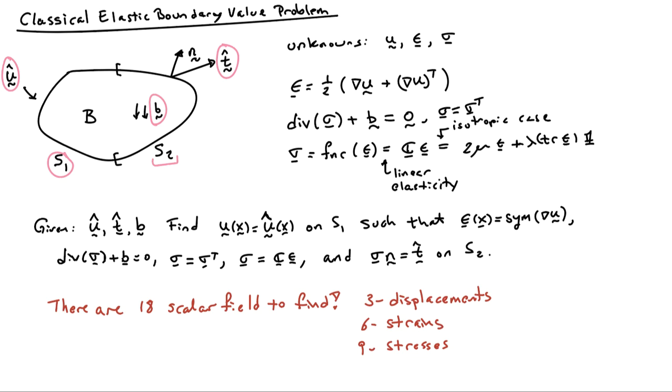Though really, one often says that they're just six, because we already know we have this statement that the stress is symmetric. So there are three sort of trivial equations: sigma 1,2 equals sigma 2,1, etc. So, but in principle, there are 18 scalar fields to find.